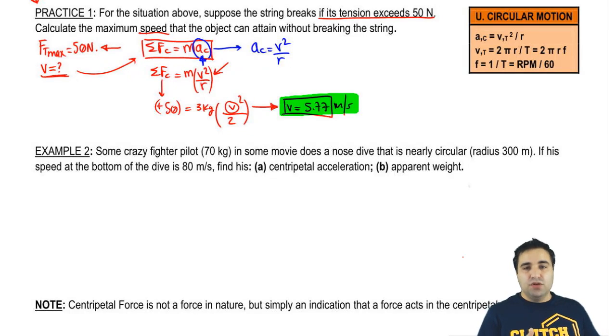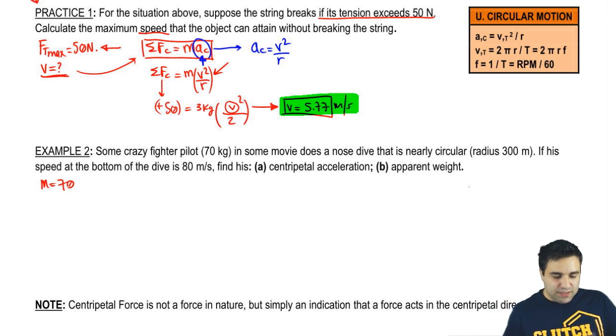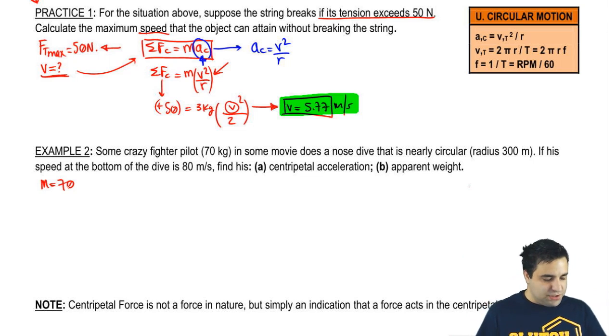All right, let's continue here. So now I'm going to do another example, but with vertical forces in a vertical circle. So it says here's some crazy fighter pilot of mass 70 kilograms, mass equals 70, and in some movie does a nosedive that is nearly circular. Nearly circular is just going to mean we're going to treat this as a circle.